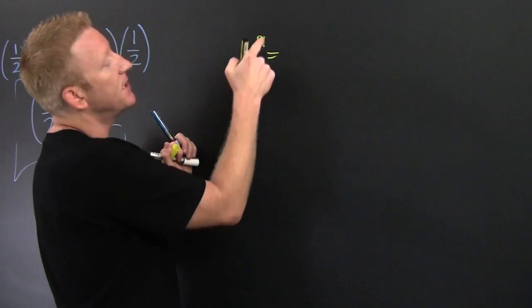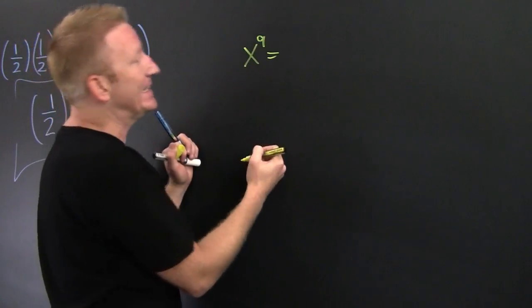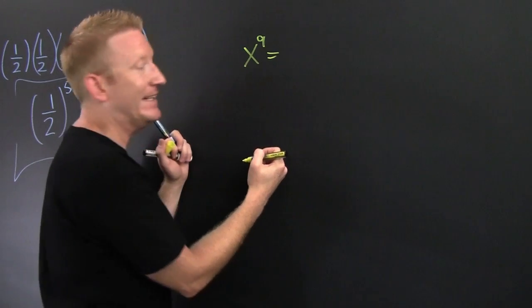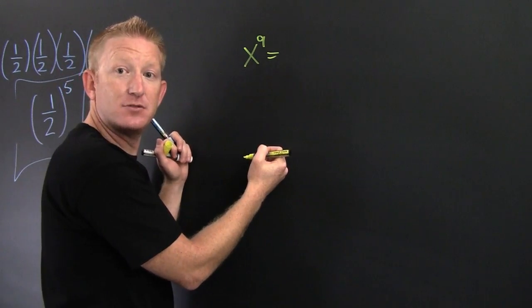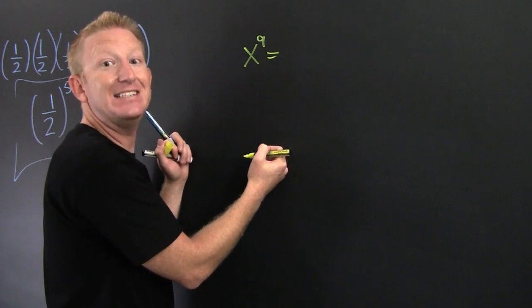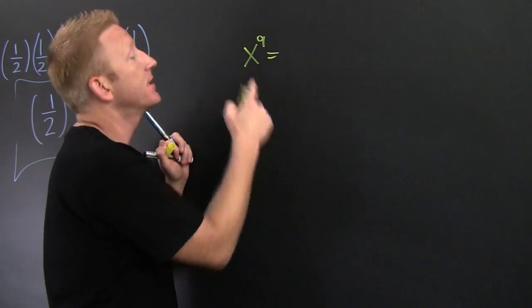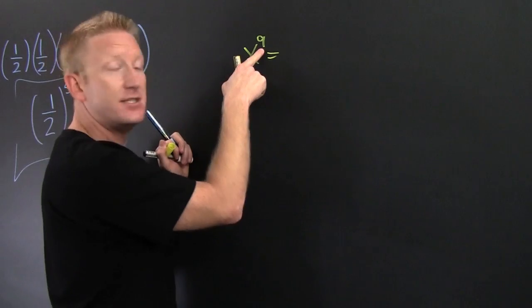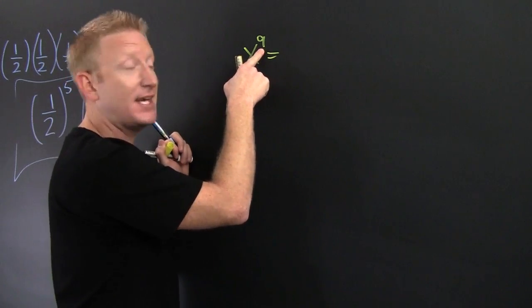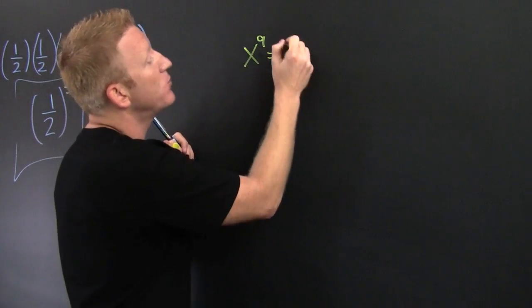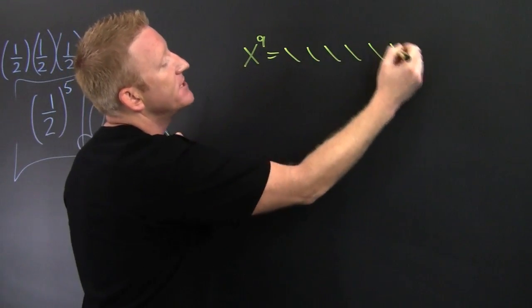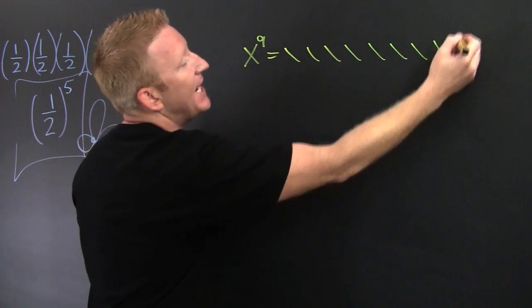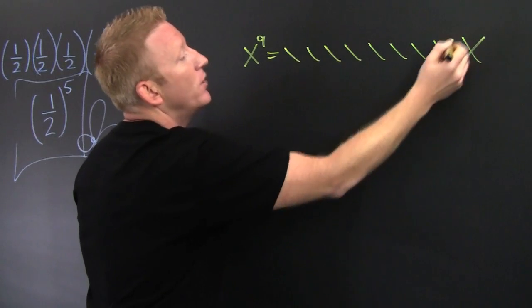Let's write what this exponentiation does. That's x to the ninth. So you need to expand that out nine times, because exponentiation is repeated multiplication. So it's one, two, three, four, five, six, seven, eight, nine x's.